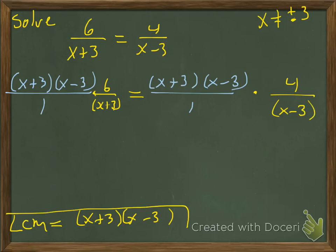For the first one, on the left-hand side, the x+3s will cancel. We'll be left with 6 times (x-3), which is 6x-18. Equals, and then the x-3s will cancel. We'll have 4 times (x+3), which is 4x+12.